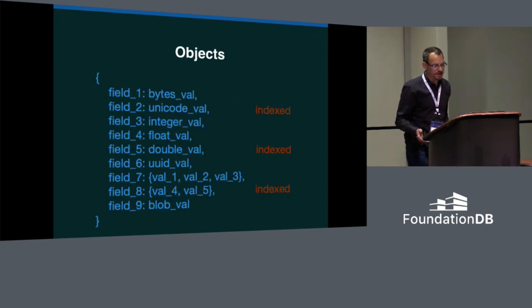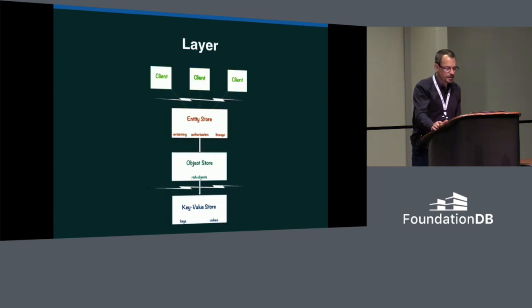Objects are schema-less and consist of any number of fields with values. Fields can be single-valued or set-valued. In either case, can optionally be indexed, and fields can also have large blob values.